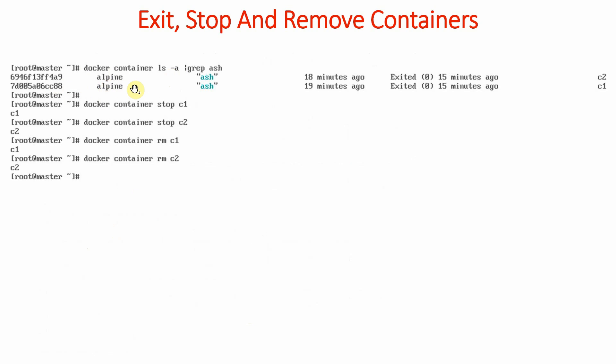With docker container ls we can view the running containers. Then with docker container stop c1 we stop the first container, and docker container stop c2 stops the second. We then remove the containers by running docker container remove c1 and docker container remove c2. To summarize: to exit from a container press Ctrl+D; to stop a container run docker container stop; and to remove a container run docker container rm.